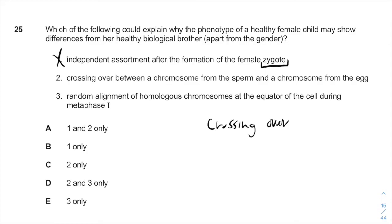Crossing over between a chromosome from the sperm and the chromosome of the egg doesn't occur. The crossing over occurs during spermatogenesis in the chromosomes of the sperm itself, and during oogenesis, random alignment of homologous chromosomes at the equator of the cell during metaphase 1.